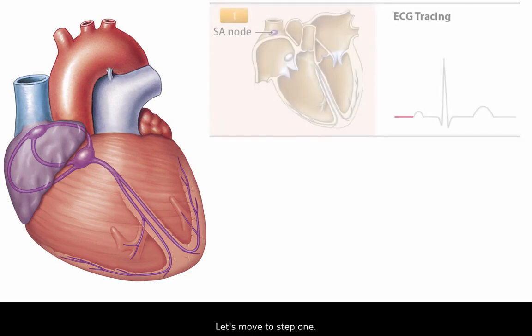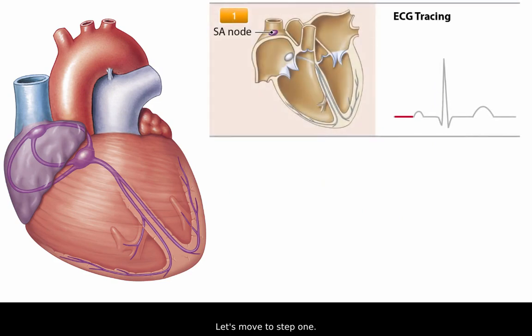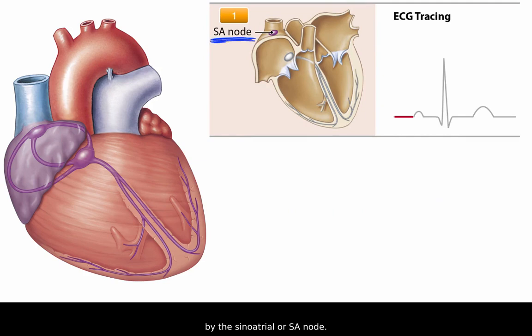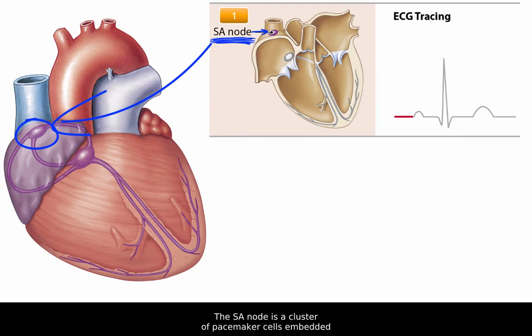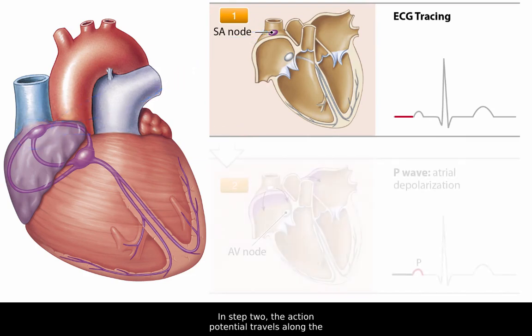Let's move to step one. Each heartbeat begins with an action potential generated by the sinoatrial, or SA node. The SA node is a cluster of pacemaker cells embedded in the posterior wall of the right atrium.